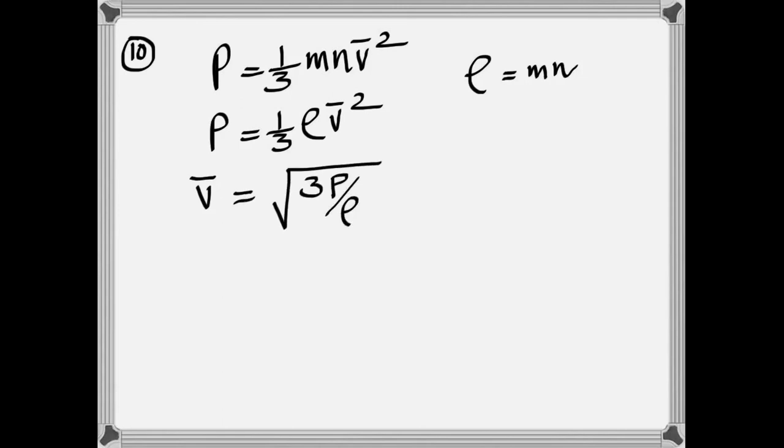And density is M times N, because N here is the number of molecules in 1 meter cubed, and M is the mass of one molecule. So when you multiply them, you get the density, because it's the total mass in 1 meter cubed.